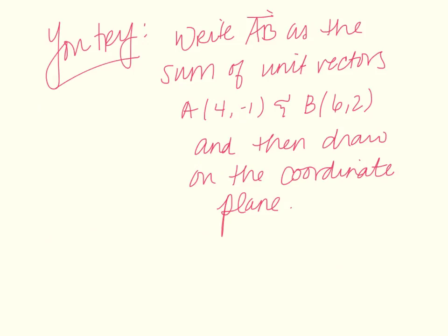Finally, I'd like you to try one of those. Write AB as the sum of the unit vectors, where a = (4, -1) and b = (6, 2). Make sure to draw them on the coordinate plane so you can see how they're represented graphically. Thank you for listening, and we will do more examples in class tomorrow.